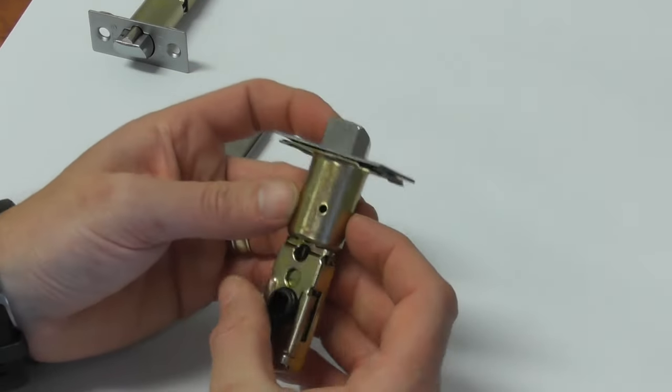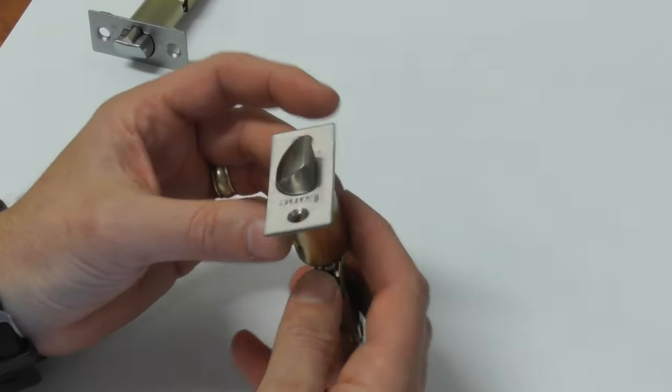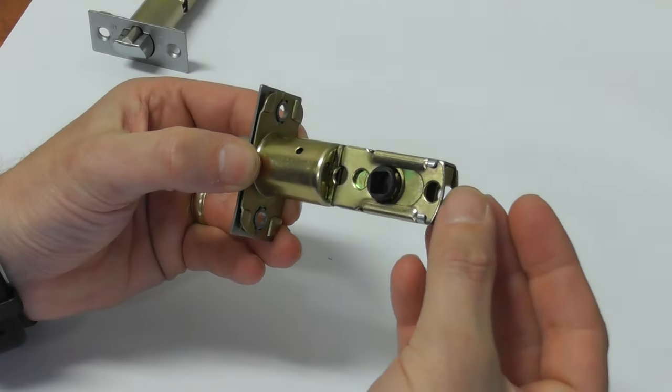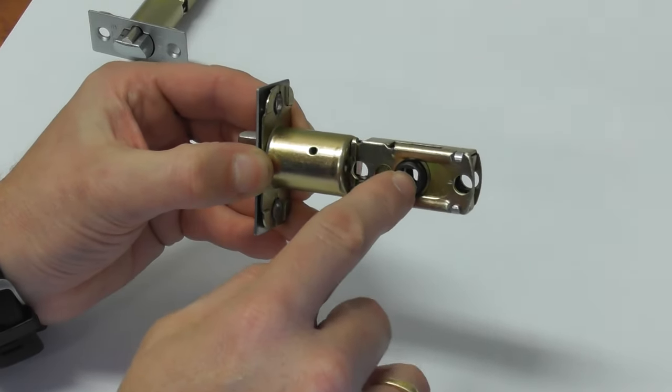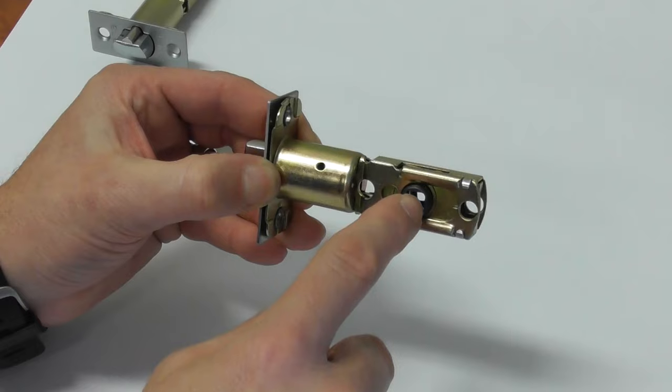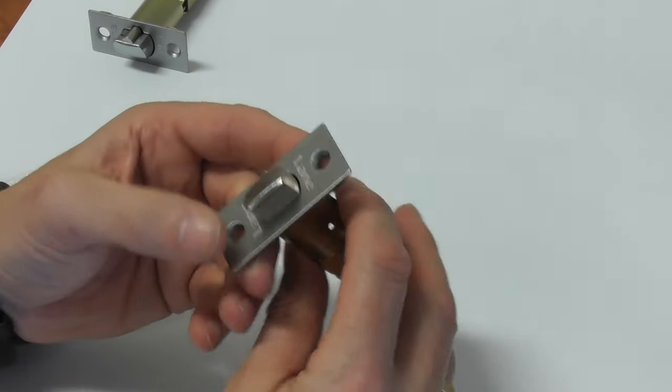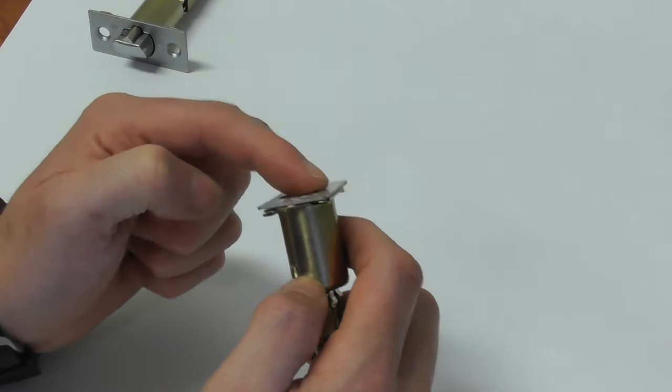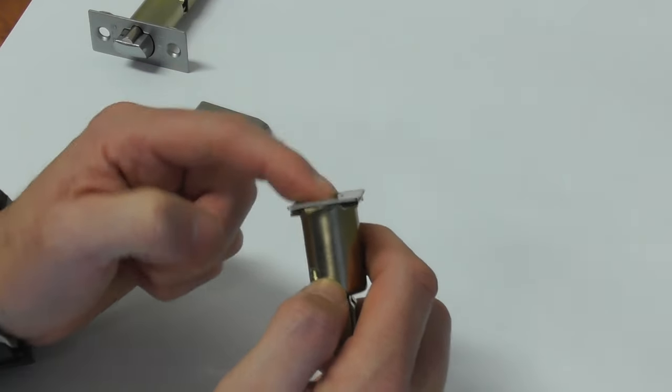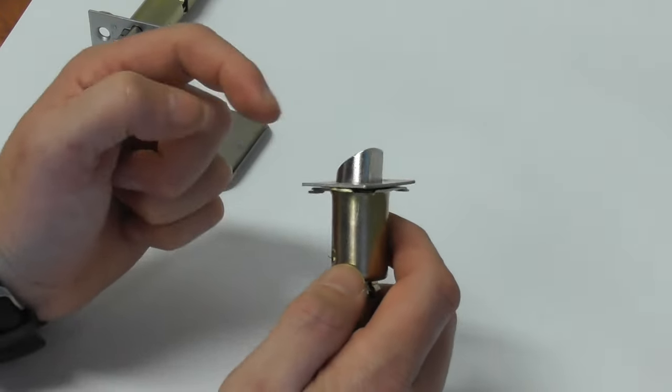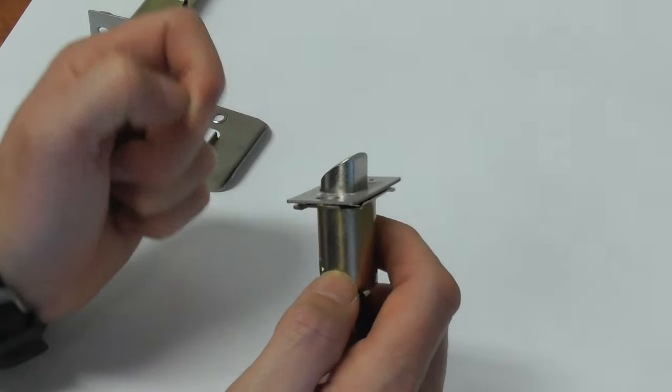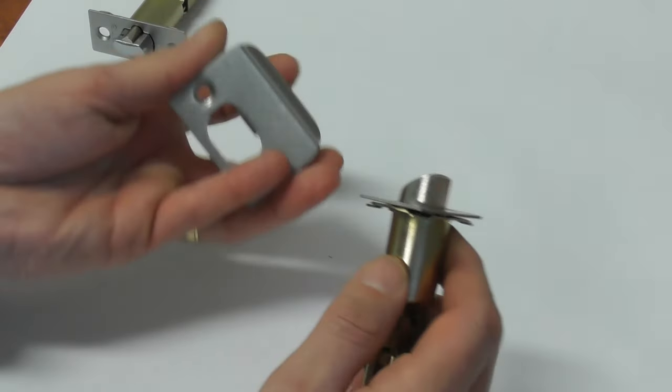So what's a latch? A latch will look something like this. When it's in the door, you only see the front part, but there is this part behind which goes down to where a lever set or a knob set might be attached to it. And you have this plunger here, which is spring-loaded, so it'll always pop back out. It has a flat surface and an angled surface.